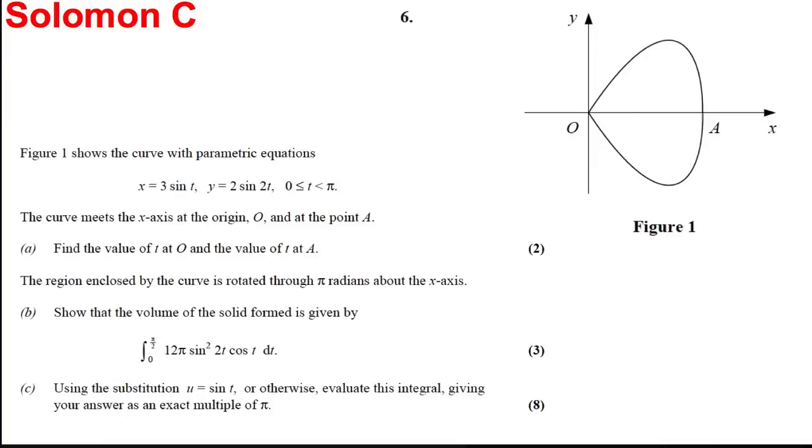Okay, so here we've got another parametric equation question. The curve shown in Figure 1 has parametric equations x = 3sin(t), y = 2sin(2t). Notice this is a double angle and this is a single angle, and t is between 0 and π.